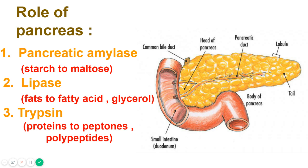The pancreatic juice also contains sodium bicarbonate, which partly neutralizes the chyme coming from the stomach, which is acidic. Pancreatic juices and their enzymes do not work well in acidic conditions, and that is why pancreatic juice contains sodium bicarbonate.